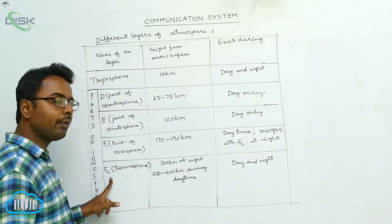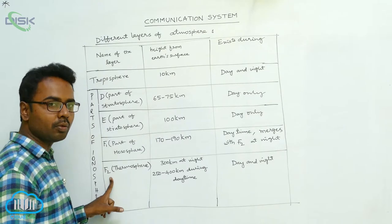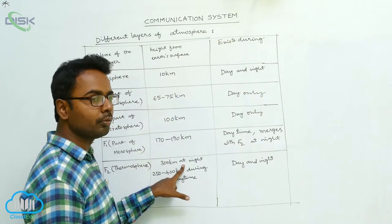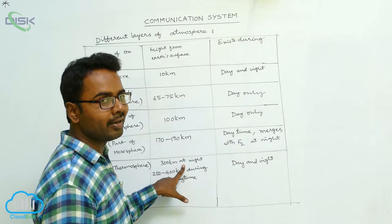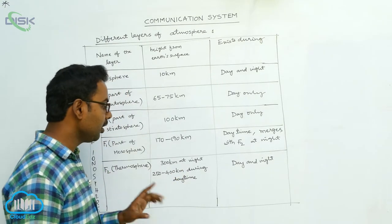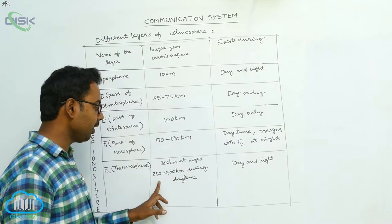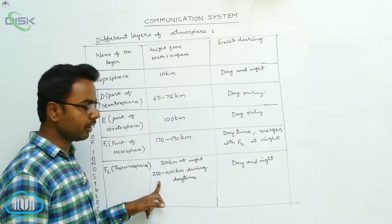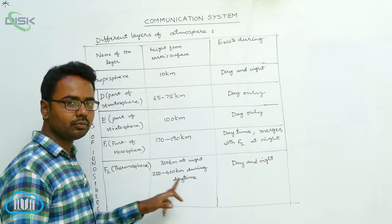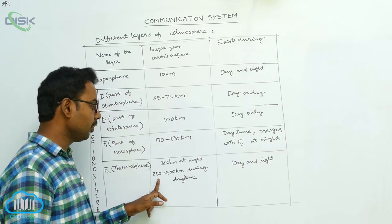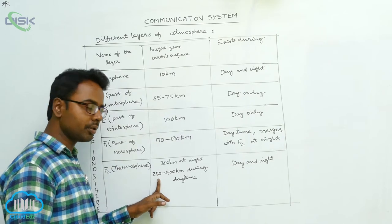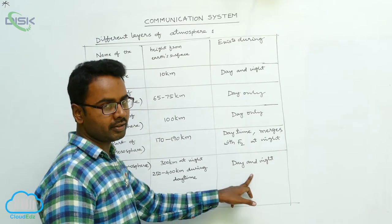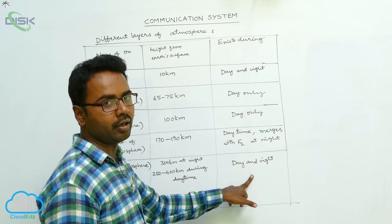F2 is the part of thermosphere. At night time it is at a height of 300 km. But during daytime it extends from 250 km to 400 km. F2 exists during both day and night.